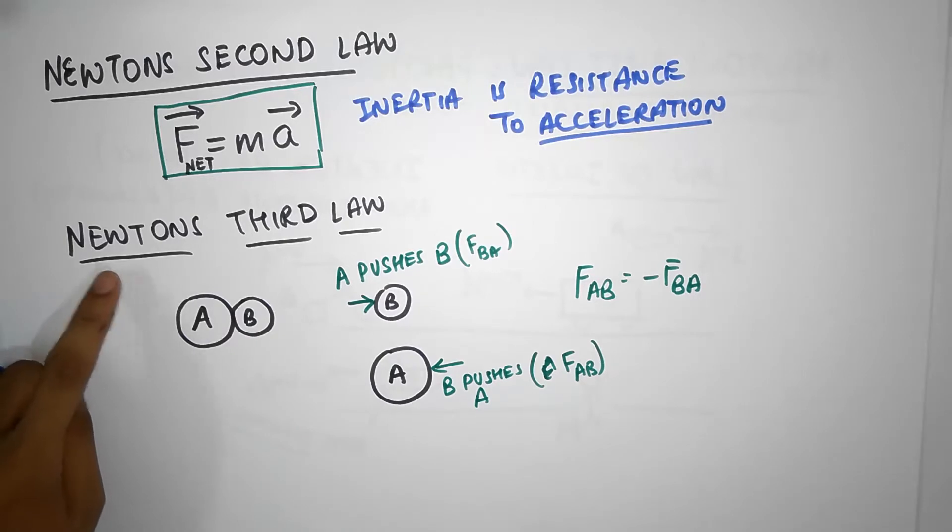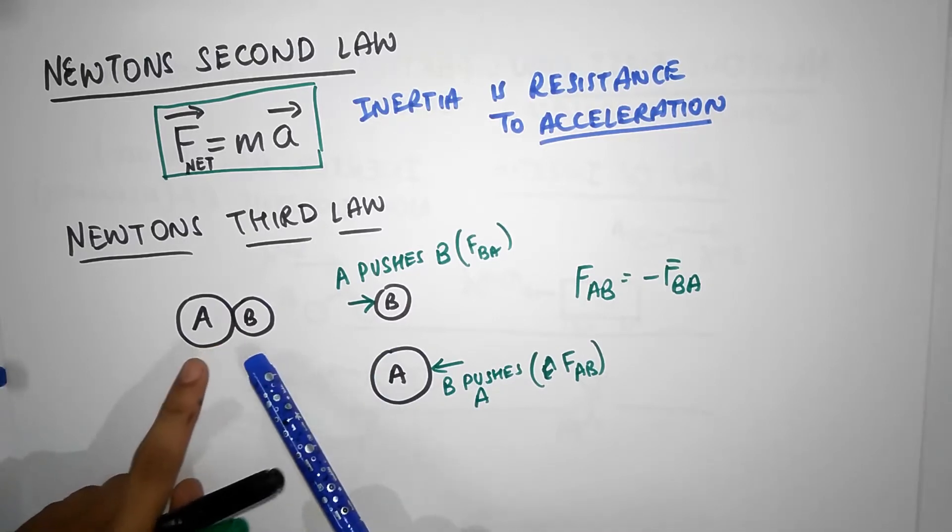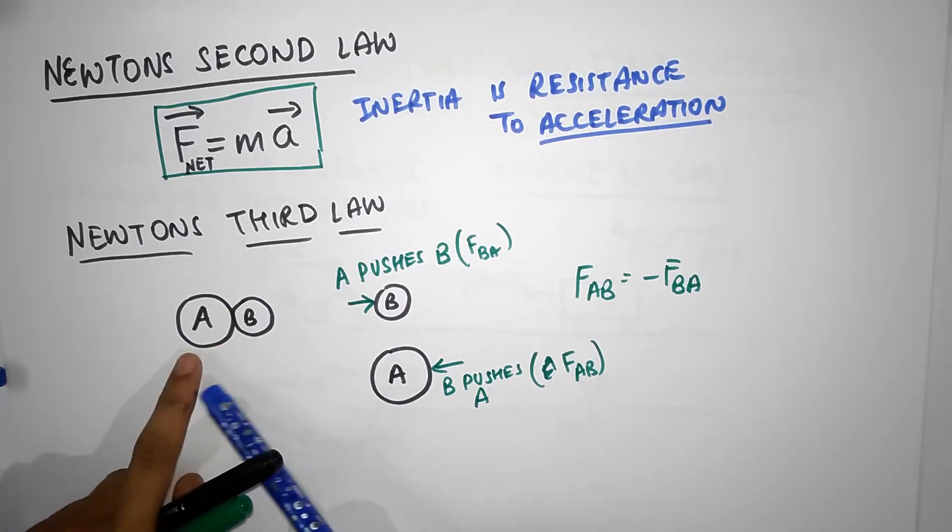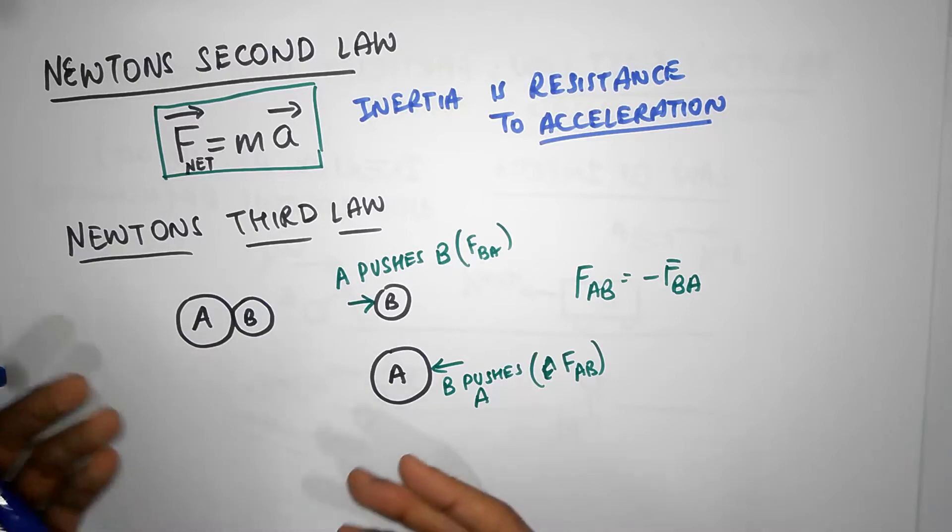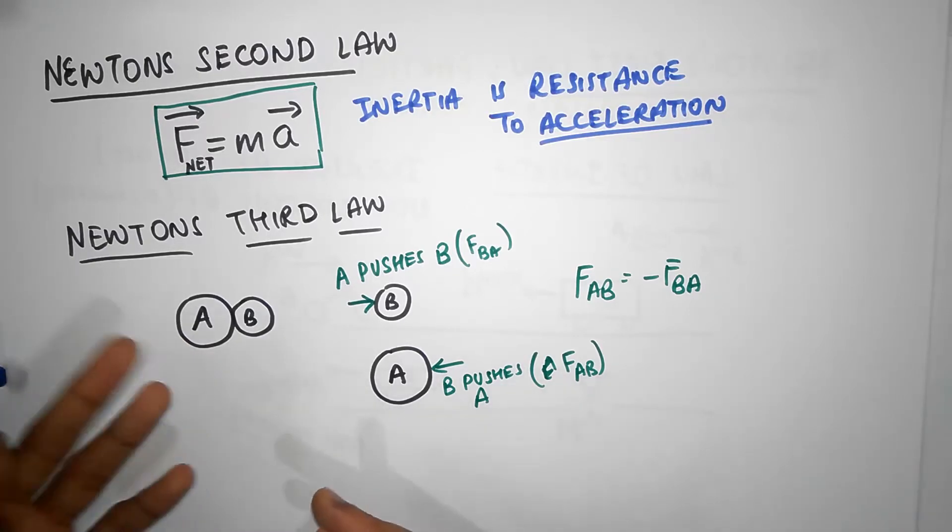I want to go to Newton's third law which is one of the most confused laws I ever find when teaching someone. Here we have two bodies which are colliding with each other and clearly I don't know which body smashed into which one. Maybe A smashed into B or B smashed into A, but whatever it is.